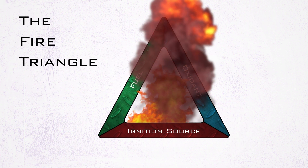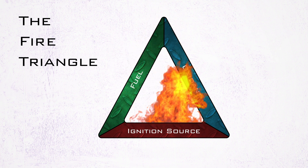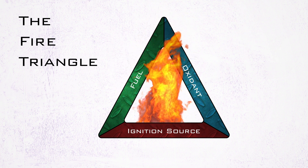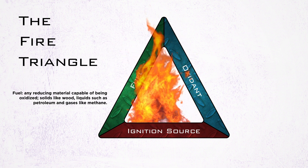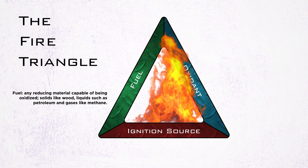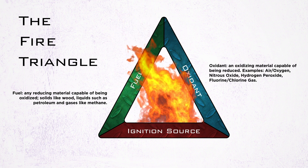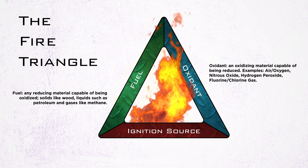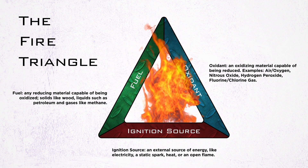The first thing we must understand is the fire triangle. Combustion cannot occur unless all three aspects of the triangle are present. Those three aspects are: fuel, or any reducing material capable of being oxidized; oxidant, or an oxidizing material capable of being reduced; and ignition source, an external source of energy.